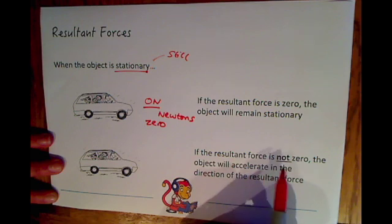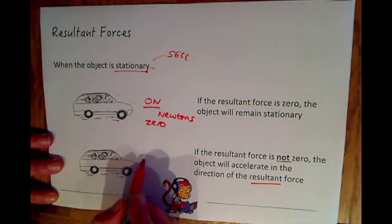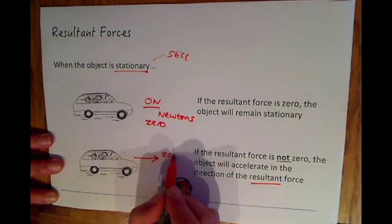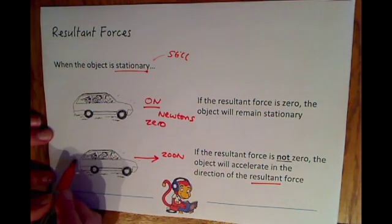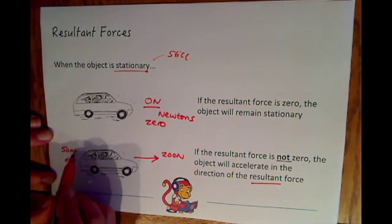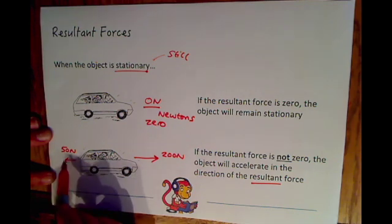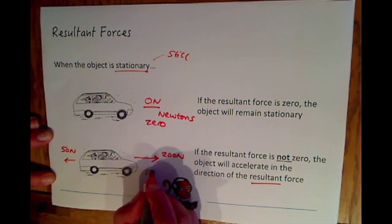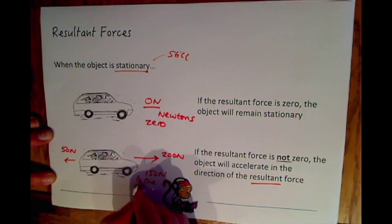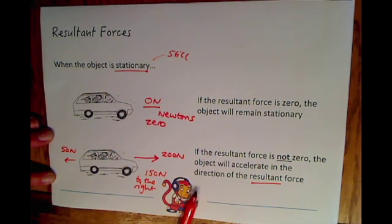The second scenario: the object is still stationary, but if the resultant force is not zero, the object will accelerate in the direction of the resultant force. For example, if we had an engine force of 200 newtons providing a forward force and a smaller force of 50 newtons in the opposite direction, we'd have a resultant force of 150 newtons to the right. Therefore the object, from stationary, will accelerate to the right.